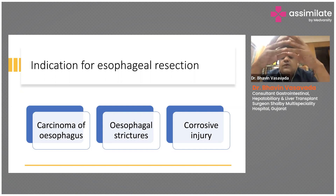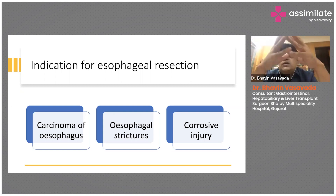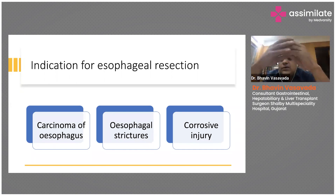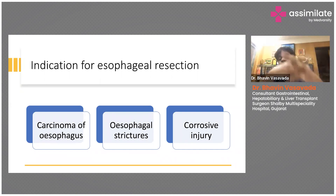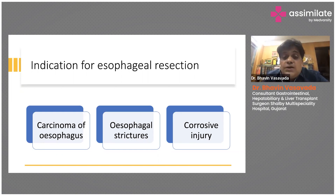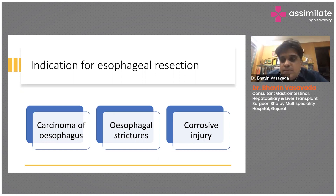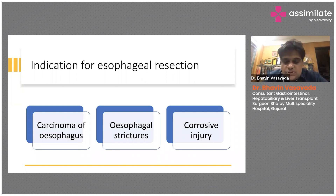There are three main indications where we offer a patient esophageal resection. First is cancer of the esophagus. Second is esophageal strictures — these can be due to benign peptic strictures where all endoscopic treatment has failed. Another common cause in India is corrosive injury, mostly due to suicidal tendencies where people ingest alkali or acids available in the local market.